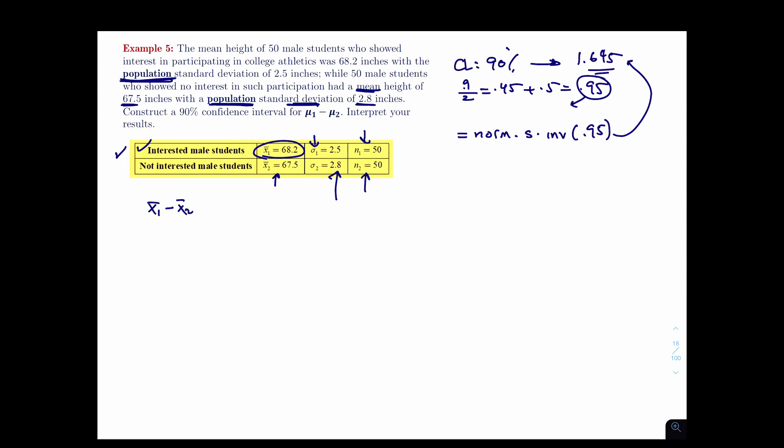Now you just plug it in. X1 bar minus X2 bar minus the Z times the formula. You don't need to worry about this because as I've said many times, you guys are going to be given the formula sheet during the test. This whole chapter is the same thing. Once you get a feel for what's going on, it's just plugging in numbers. That's all it is. So X1 bar is 68.2 minus 67.5 minus 1.645 times the square root of 2.5 squared over 50 plus 2.8 squared over 50. Then mu1 minus mu2, and I'm not going to bother writing this side because it'll be the same thing with a plus in between.